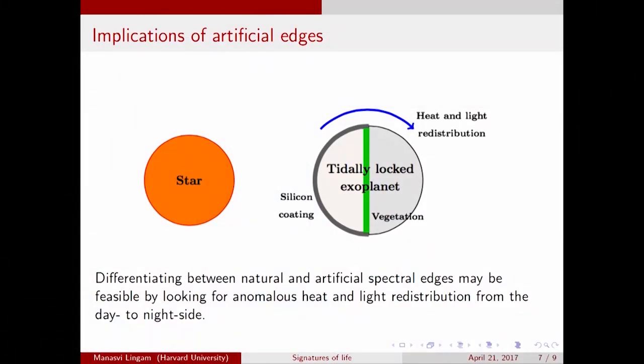This is a feature we should bear in mind when carrying out a flyby mission — there might be civilizations relying on harnessing stellar energy to meet their needs. How do we distinguish between the natural and artificial cases? If we can look at photographs of the planet and resolve down to the scale of kilometers, it's possible we might find these structures directly. Alternatively, we can think of a tidally locked planet with a silicon coating transferring heat and light from the day side to the night side. If we find signs of anomalous heat and light redistribution beyond what one would expect from atmospheres and oceans, this might be another sign of artificial activity.